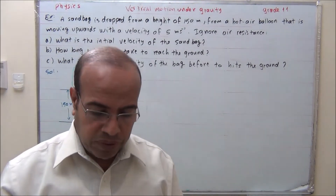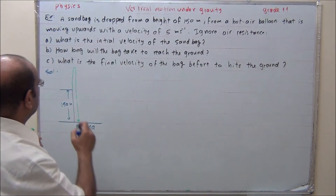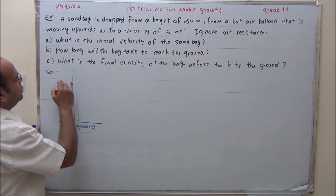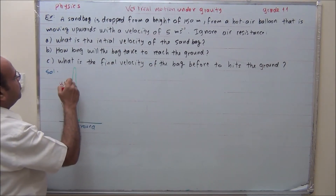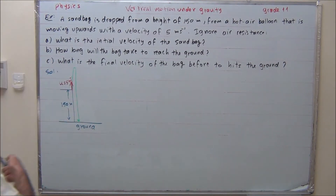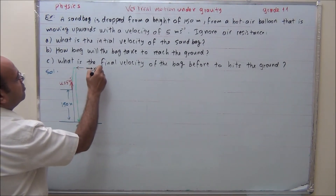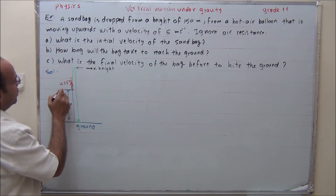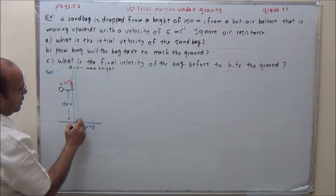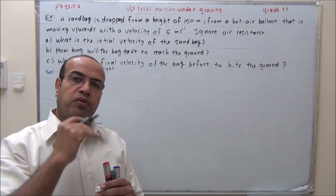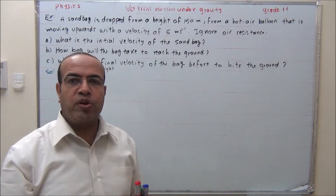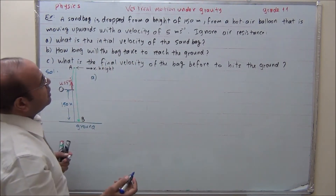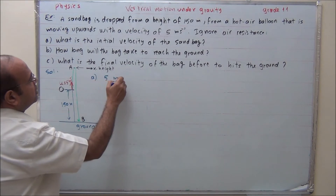We have two stages of motion. The initial velocity here is U equals 5 meters per second upward. This starting point is denoted O, the maximum height point is A, and the ground is point B. So we have two stages: from O to maximum height A, and then from A to ground B. The answer to the first part: the initial velocity of the sandbag is 5 meters per second upward.